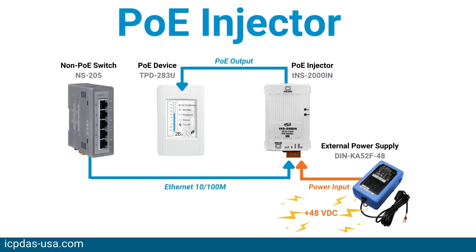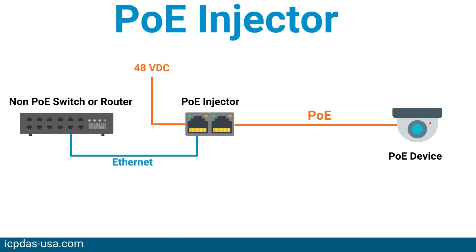Power is added to or injected into an Ethernet wire using a PoE injector. Data originating from a non-PoE switch is given more power by the injector. Low power devices that need to be installed in places without power outlets are ideal candidates for a PoE injector. It provides flexibility by making it possible to deploy devices in difficult areas with little impact on already built structures.